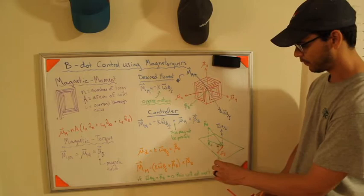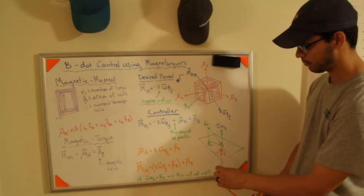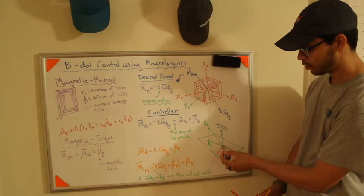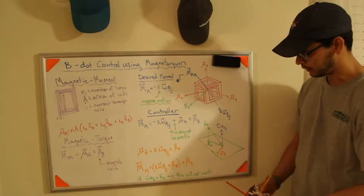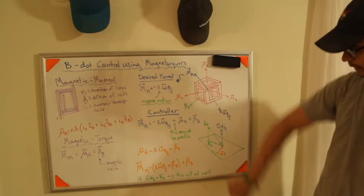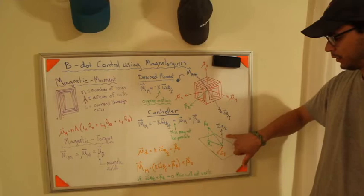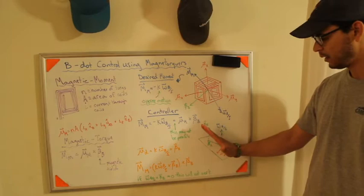The ideal scenario would be for your magnetic field to be orthogonal to omega and be in plane. Because then what you can do is you can put your magnetic moment in plane orthogonal to that, the magnetic field vector. And what you'll get is that your magnetic moment crossed with your magnetic field is down. And that would perfectly oppose the angular velocity.